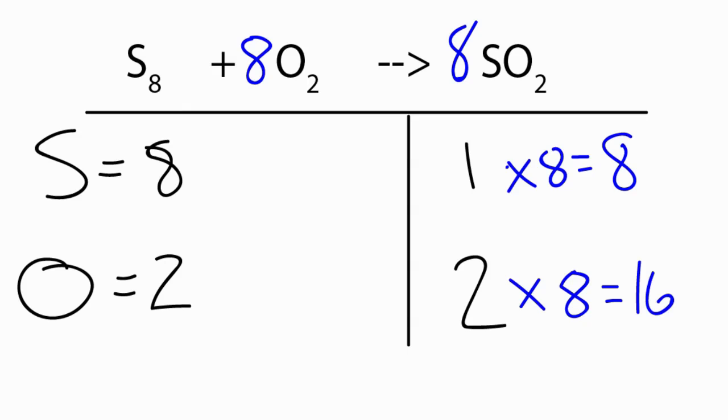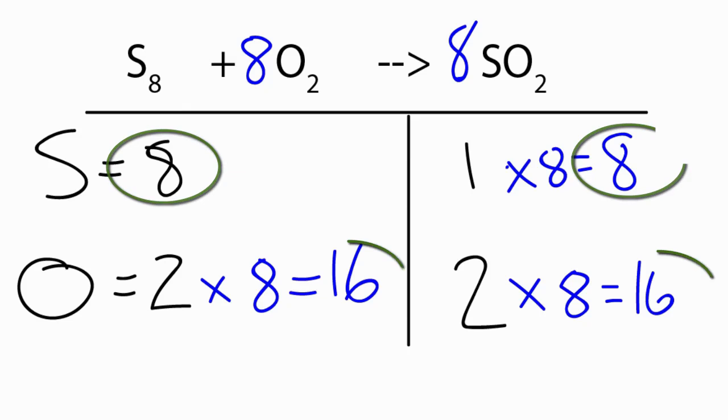We still have eight sulfurs, and then two times eight right here, that gives us sixteen. So at this point, the sulfurs and the oxygens on both sides of the equation are balanced, so we're finished with this chemical equation.